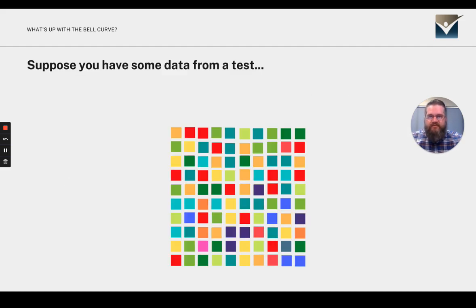Suppose you have some data from a test. Each one of these colored blocks represents a piece of information from a respondent. In this particular test there were a hundred different respondents, and so each one of these colored squares represents their score on the test.